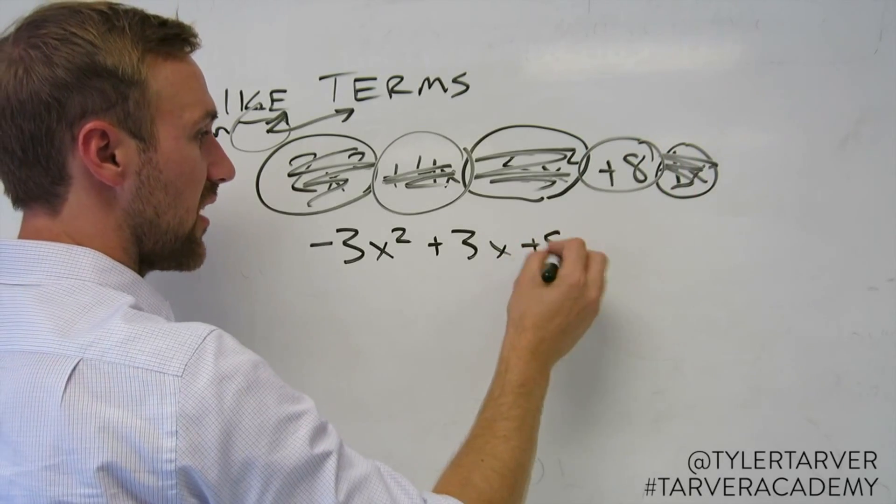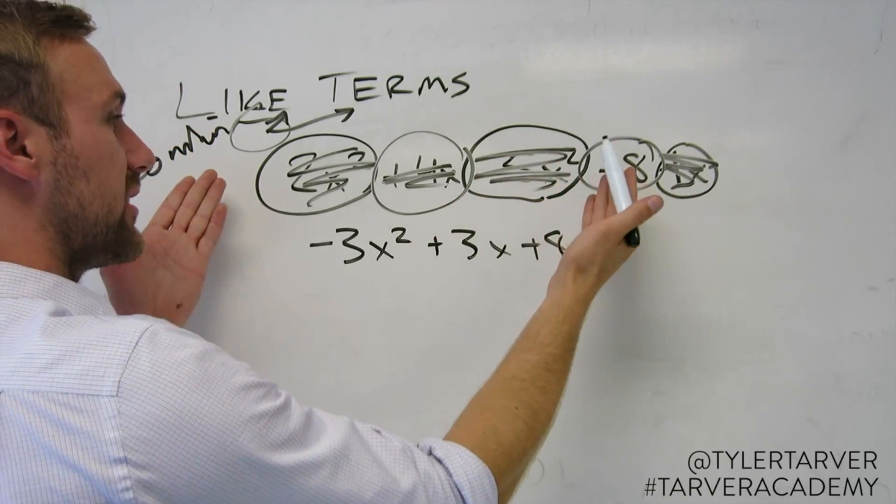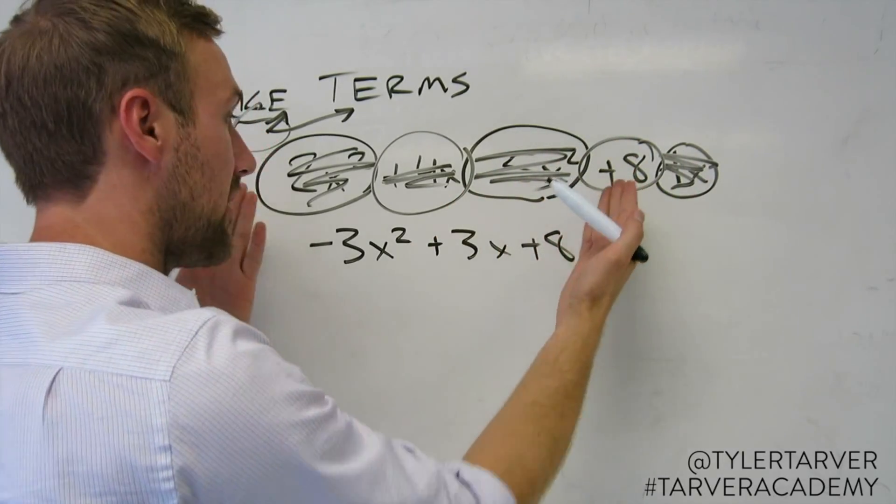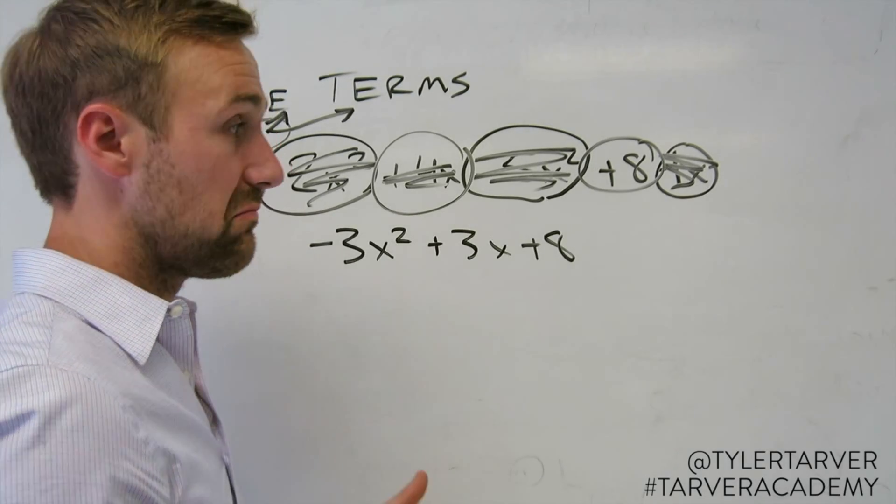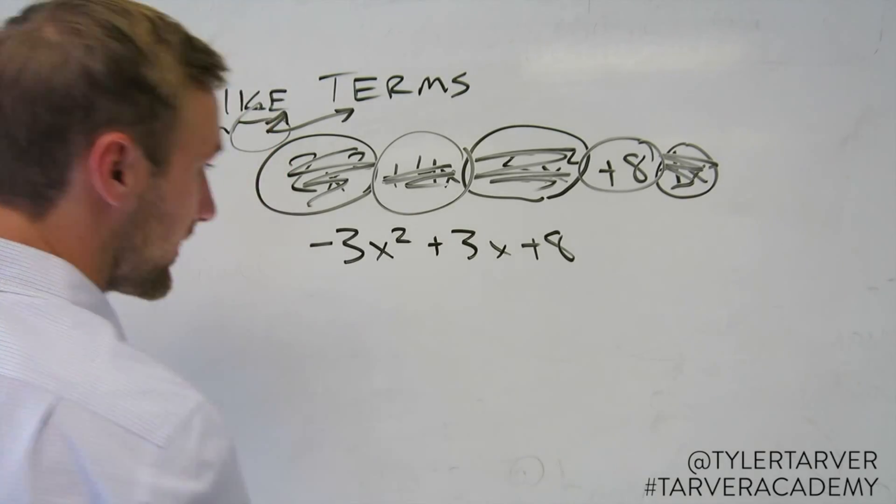And then my only thing left is 8, so I'll add there. I just combined like terms and simplified this big ol' mamma jamma and made it a manageable number. So that's combining like terms.